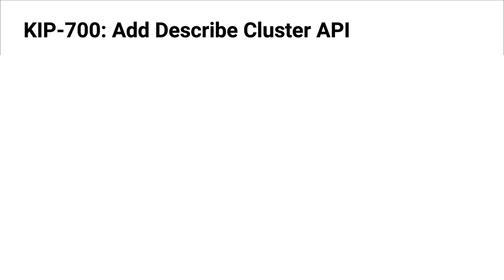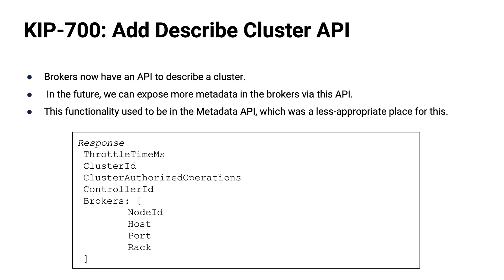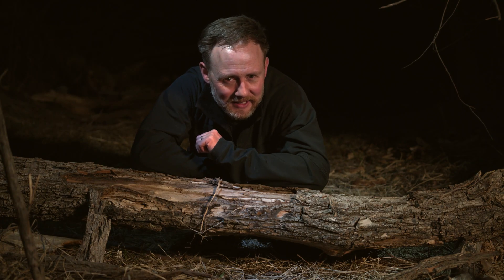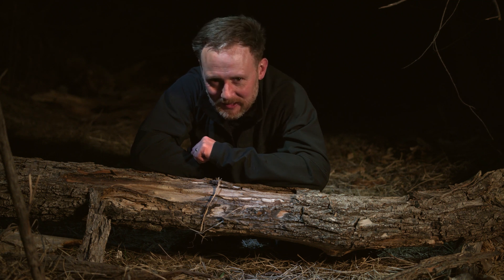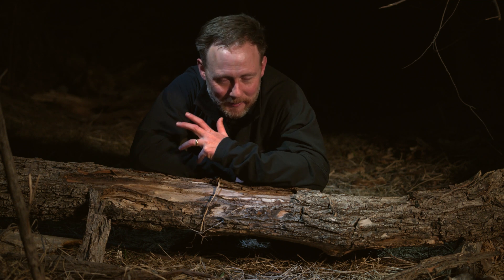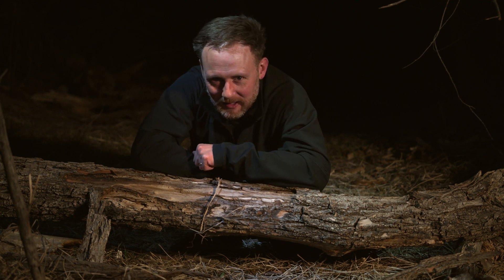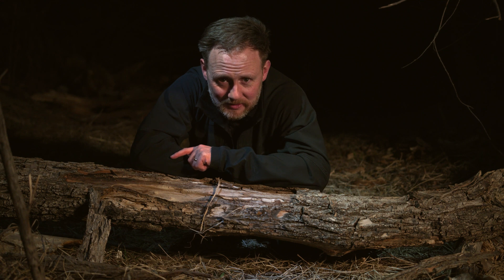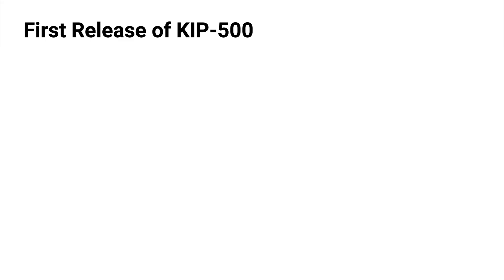KIP-700 adds a Describe Cluster API. This used to be buried in the metadata API but now has an API of its own, giving you basic cluster metadata — and it's likely to expand in the future. It's another thing that smells like Kafka getting a little more cloud-friendly: if you're running multiple clusters in the cloud, you might want to know stuff about a cluster. Lots of uses for this quite apart from cloud deployments.